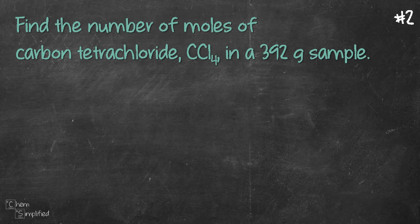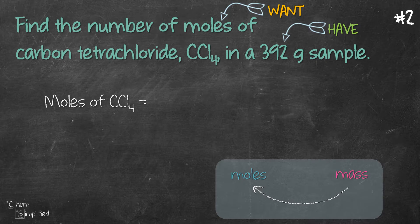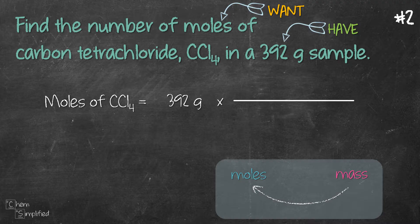This question is the reverse of the first question. It gives us the mass and it wants us to find the moles. We're going to use the same method, so we're going to start by writing out what we need to find, and then equals what we're given, 392 grams, times, draw a line across, and then we place grams at the bottom so that we can cancel them out, and then we place mole on top because that's what we need to find.